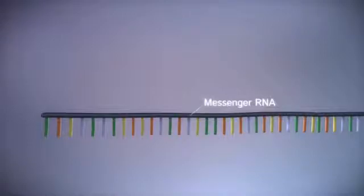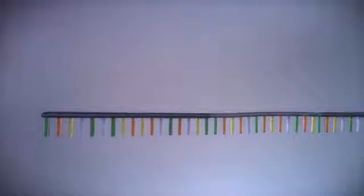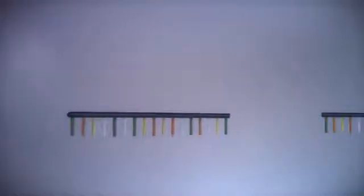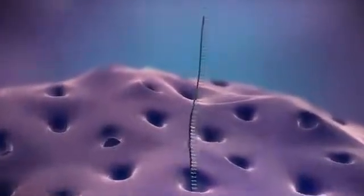Before the messenger RNA can be used as a template for the production of proteins, it needs to be processed. This involves removing and adding sections of RNA. The messenger RNA then moves out of the nucleus into the cytoplasm.